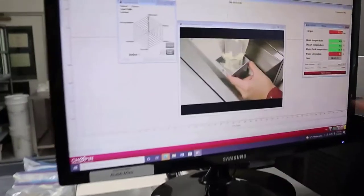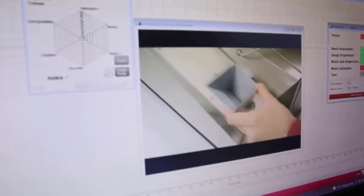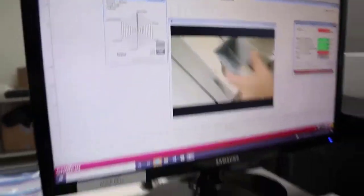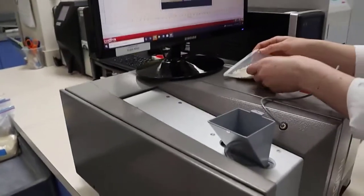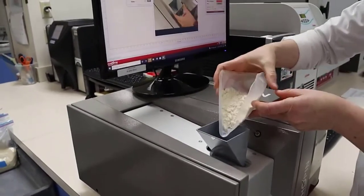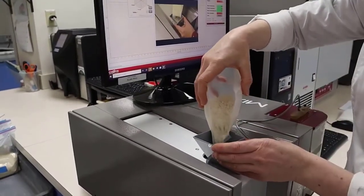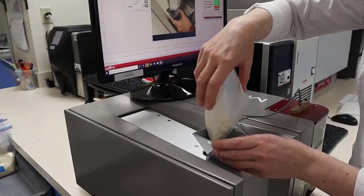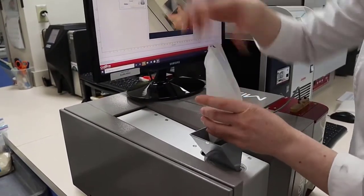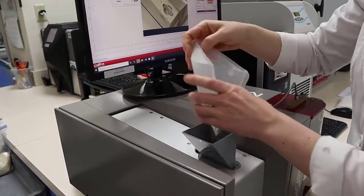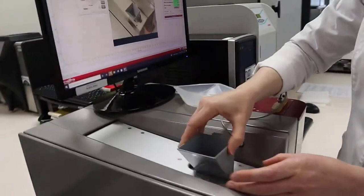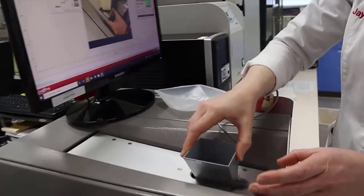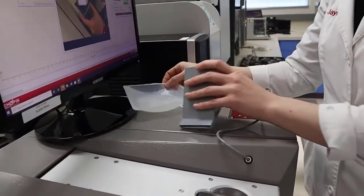So the software automatically pulls up videos showing what you need to be doing at any particular point in the test. So at this point I need to be adding the flour. So using the funnel that comes with the instrument, make sure I get all the flour in.